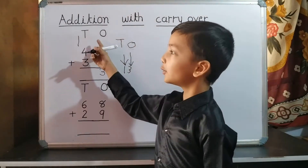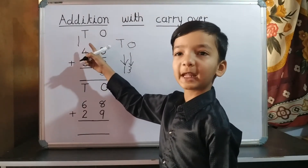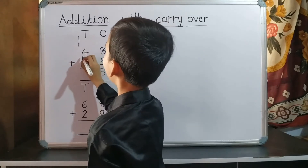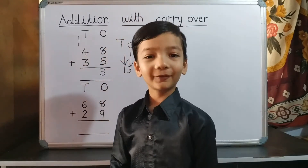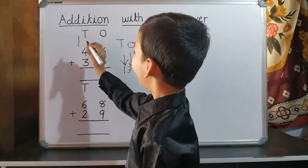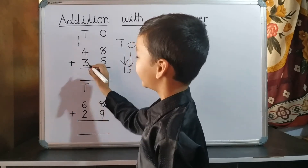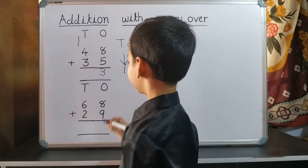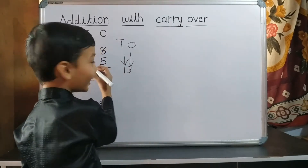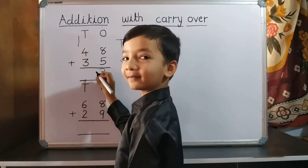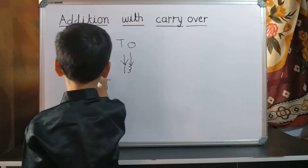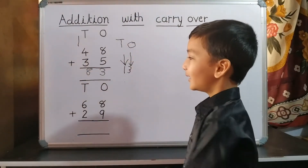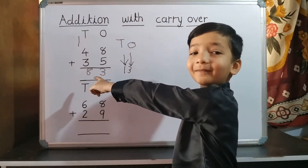So we write 3 on one's place and 1 carryover to ten's place. Now we do addition of ten's place. So we write 8 on ten's place. 83 is our answer.